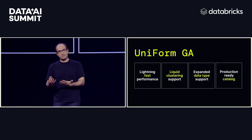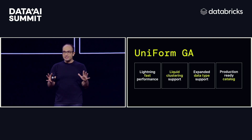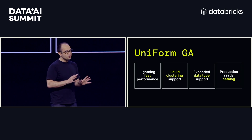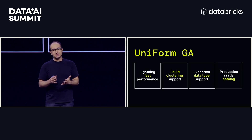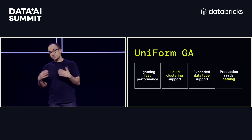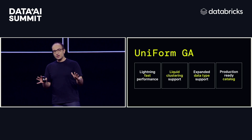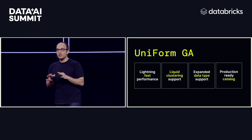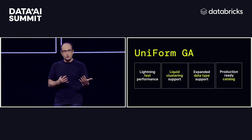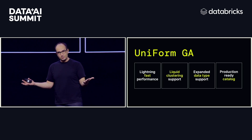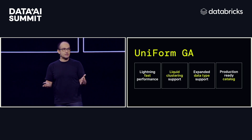We've worked very closely with the Apache XTable and Hudi team to make that possible, and we're going to be working with the Iceberg team to make it even better. The great thing about Uniform is there's barely a noticeable performance overhead. It's super fast. You get awesome features like liquid clustering. There's support for all of the different data types from map, lists, arrays. And best of all, it's got a production-ready catalog. With Unity Catalog and Uniform, it's one of the only live implementations of the Iceberg REST catalog API, and that's available for everybody using Uniform.